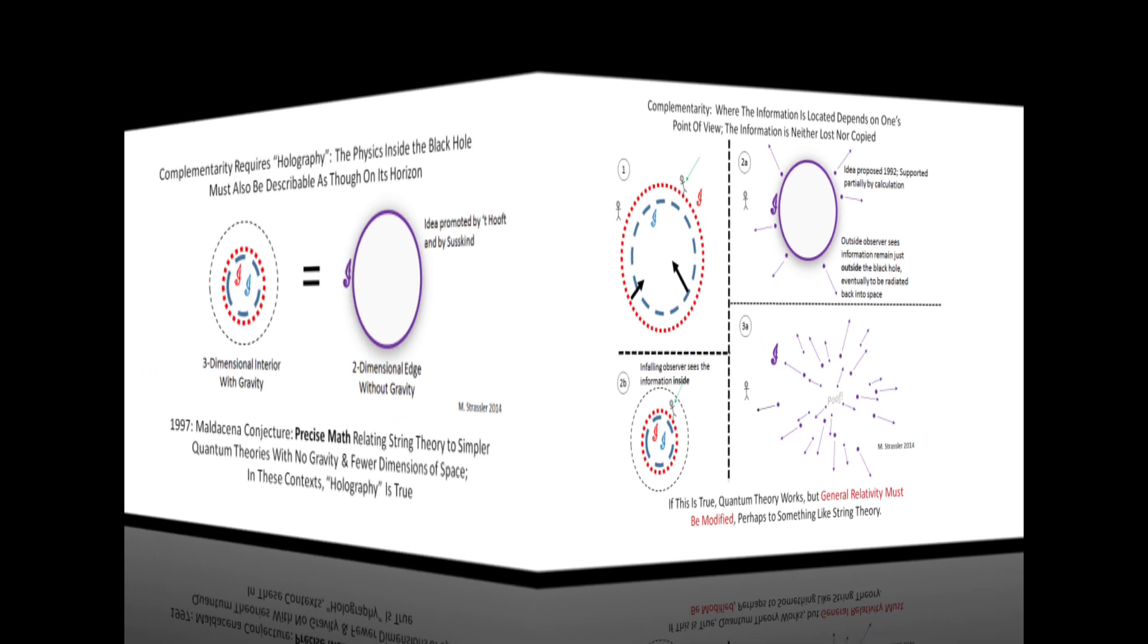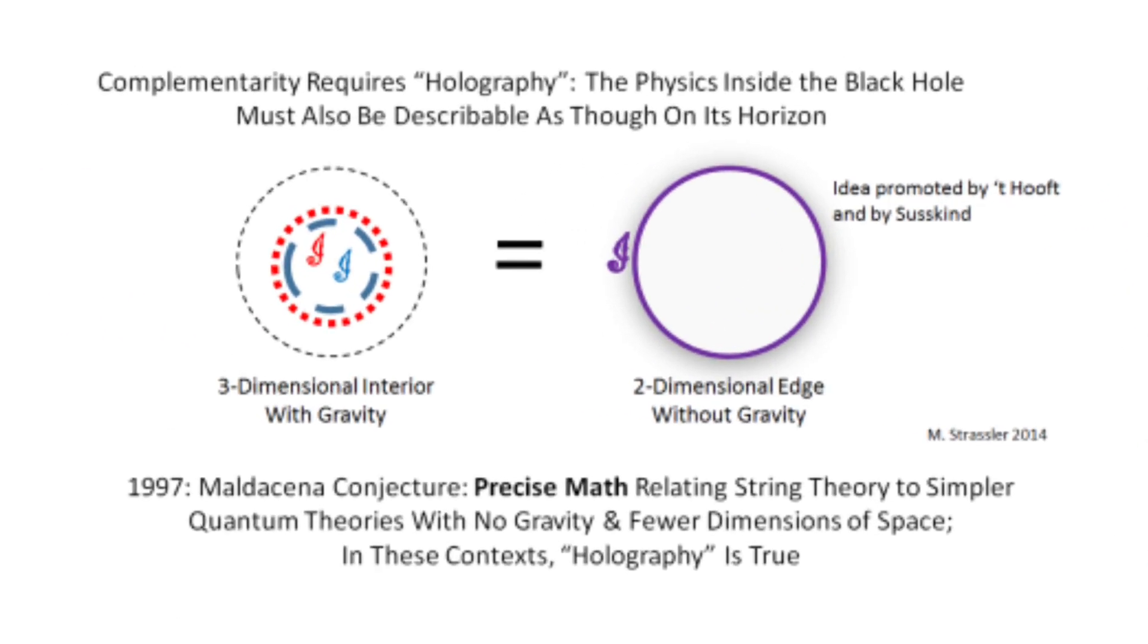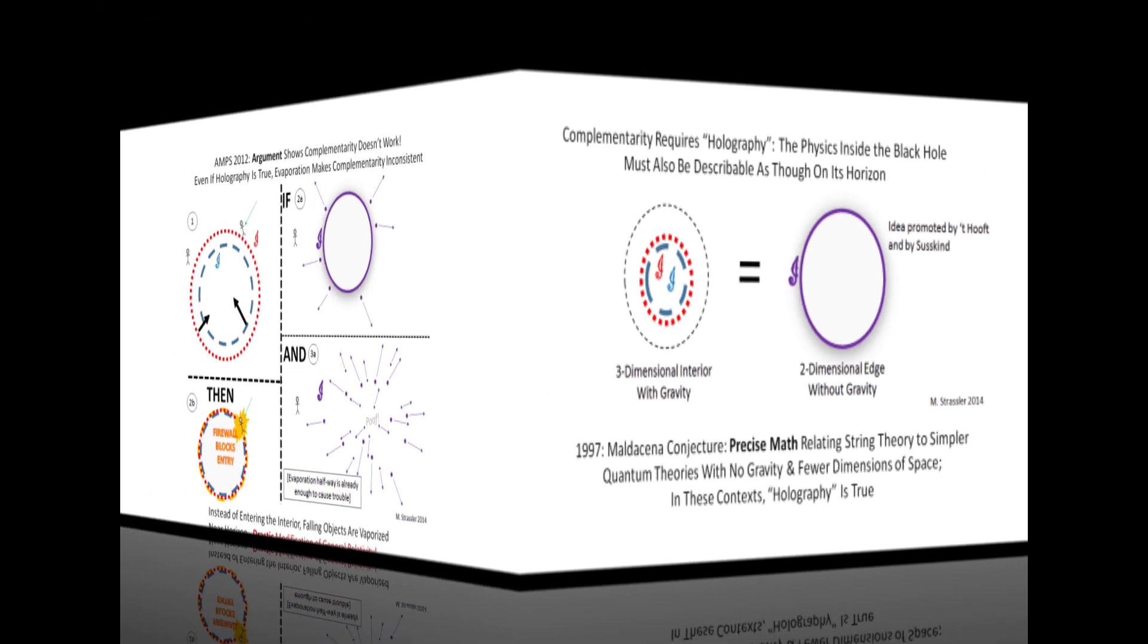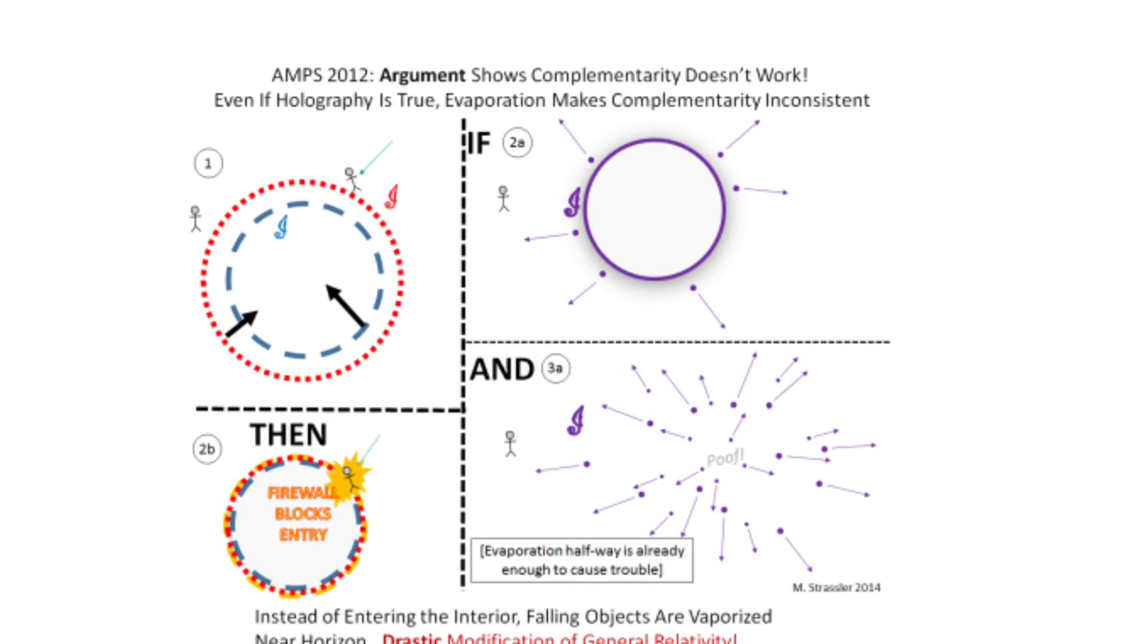This means that the predictions of quantum mechanics are correct, whereas Hawking's original argument that relied on general relativity must be corrected. But there is no general proof of that. In recent years, several extensions of the original paradox have been explored. So the information paradox still remains an active field of research within quantum gravity.